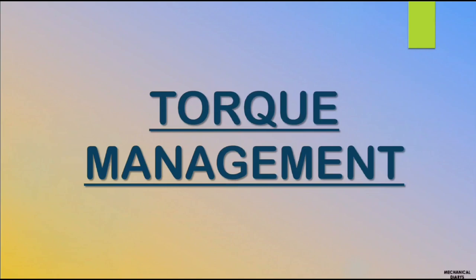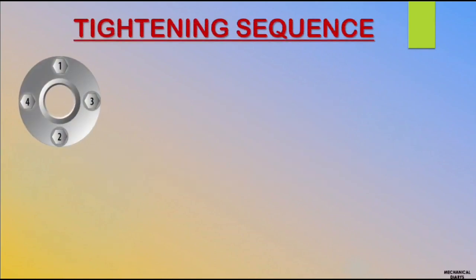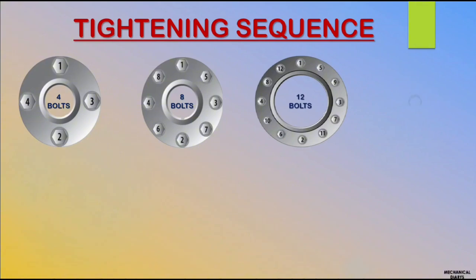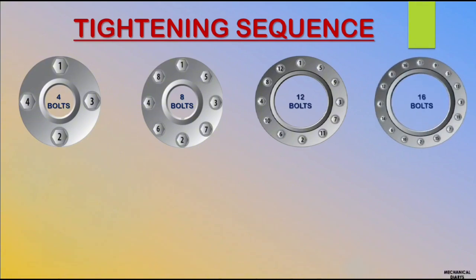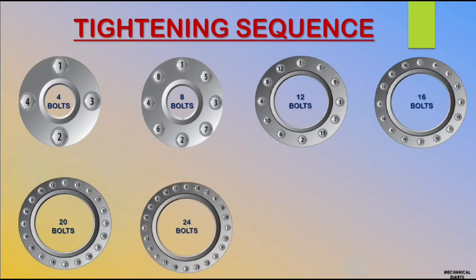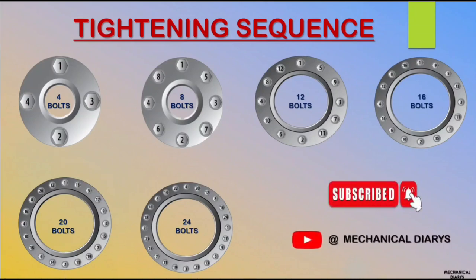Now we'll move to the most important topic — torque management. From torque management, first we should know the sequence of flange bolt tightening. First count the total bolts of the flange, then mark the numbers like the image. For example: 8 bolts, 12 bolts, 16 bolts, 20 bolts, and 24 bolts — these are the sequence numbers for standard flanges.